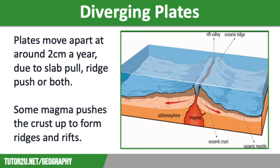Most of the magma stays below the surface, however it can push up the crust at Constructive Margins. This leads to ridges and rifts forming. In some places, the magma will erupt onto the surface. Here the lava is runny and will spread out over quite a distance before solidifying. Over time, this will form a shield volcano with a wide base and gentle slopes.